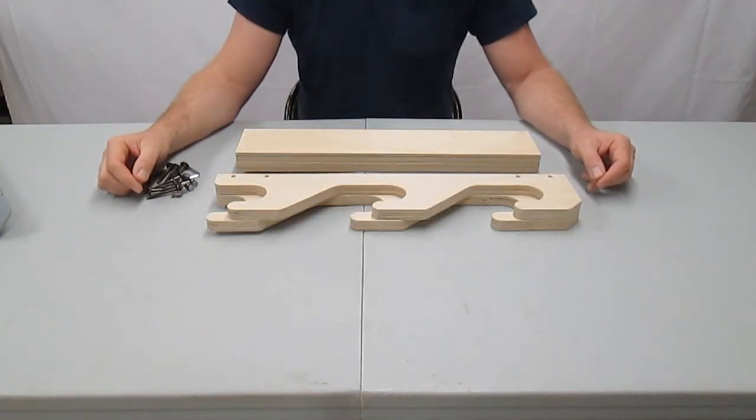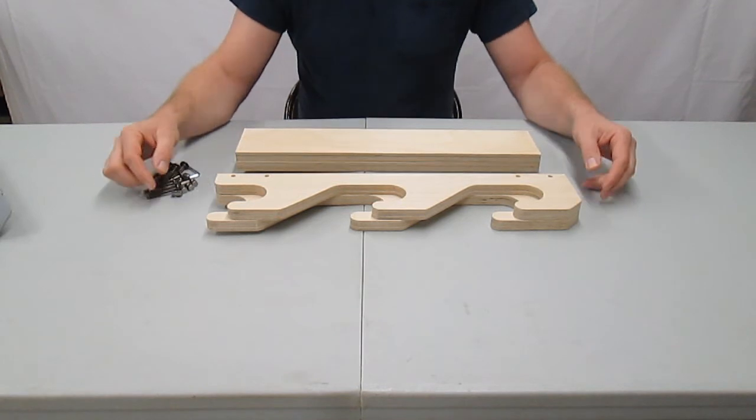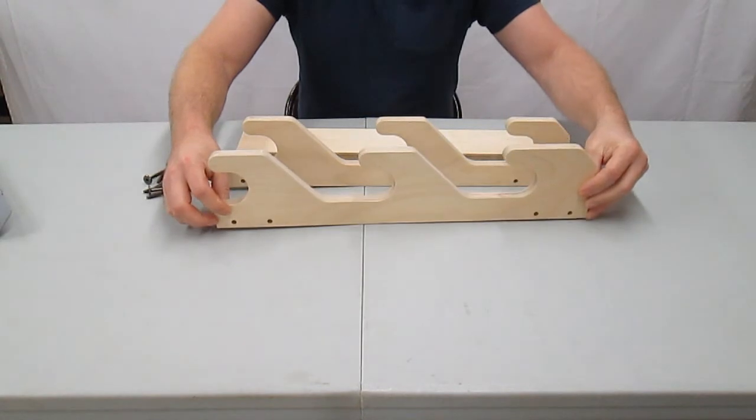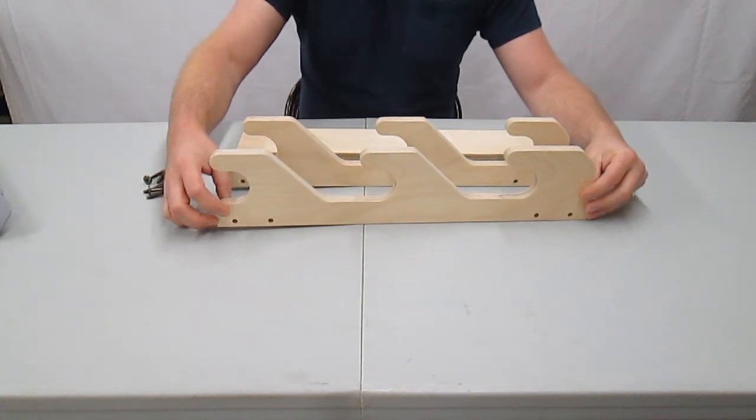To assemble the rack, determine which direction you would like the firearms to face, muzzles right or muzzles left. I'll assemble this 3-notch WR-S rack with the muzzles facing right.